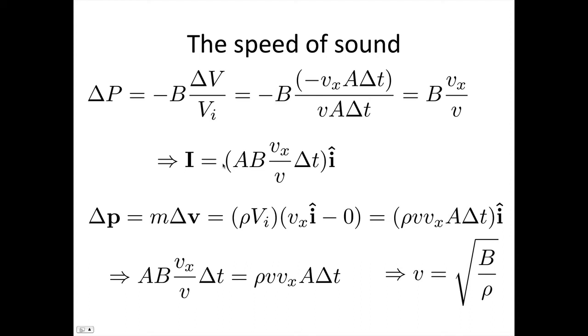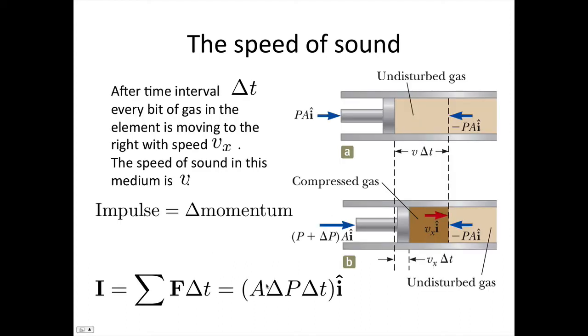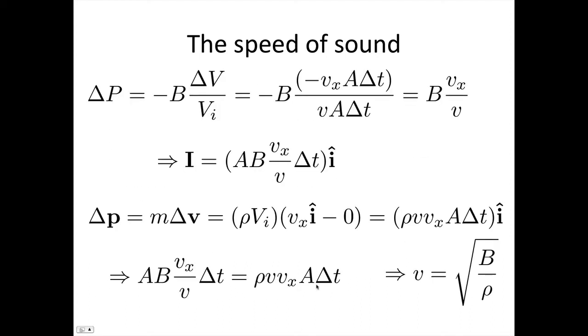So this gives us that the impulse is equal to, just having a look, we've got A delta P delta T. So we've got A and then the B Vx on V delta T I. And we know the impulse is also equal to the change in momentum. So the change in momentum is just the mass times the change in velocity. The mass of the gas is equal to the density of the gas times its volume, and the change in its velocity is the Vx I minus the 0. So that rho V Vx, because the initial volume was the V A delta T, here's the Vx and there's our I.